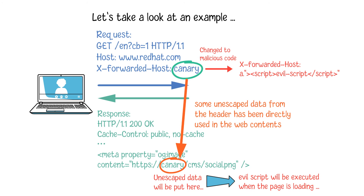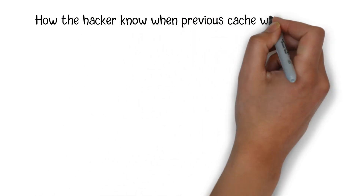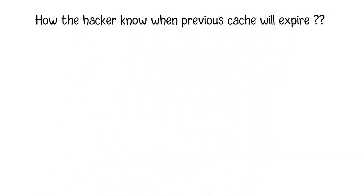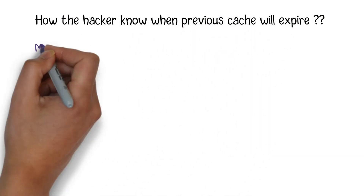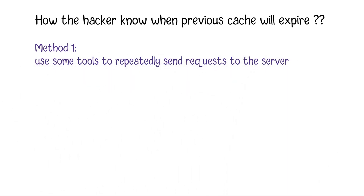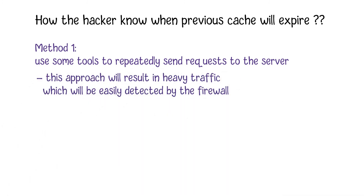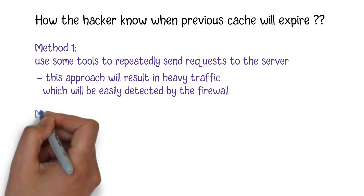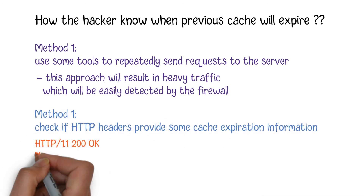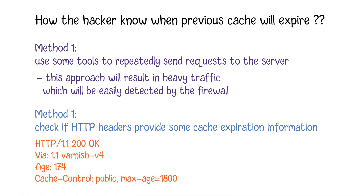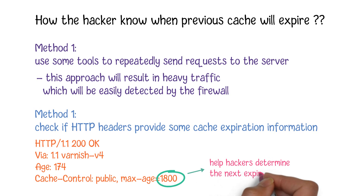When the hacker prepares the malicious HTTP header, he needs to wait for the exact time at which the previous cache will expire. One solution is to use some tools to repeatedly send requests to the server. However, this approach will result in heavy traffic which will be easily detected by the firewall. Another solution is to check if there are other HTTP headers providing some information about the cache expiration period. Some of these headers will help hackers to better determine the next expiry timestamp.